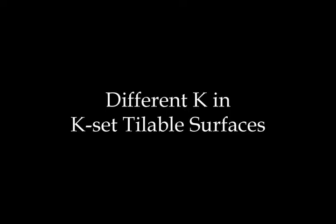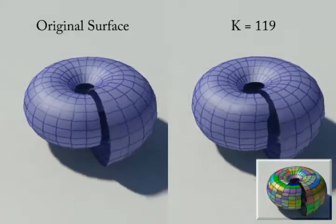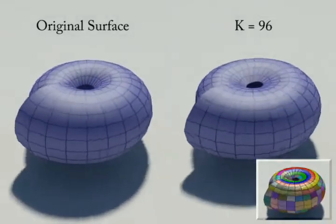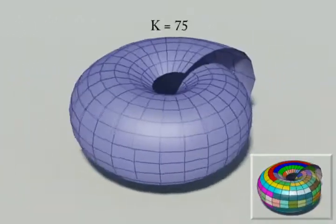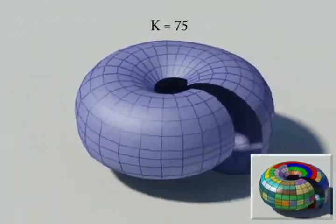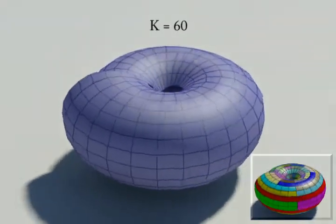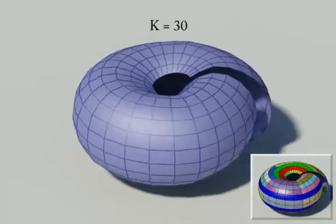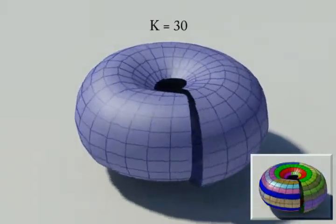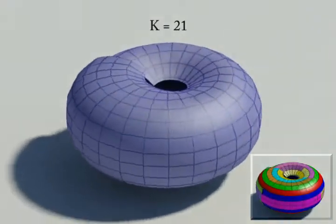Different k-set tileable surfaces. Different k in seashell: from k equals 119, to k equals 96, 75, 65, 60, 44, 30. With decreasing k, we can see that the opening of the seashell gets smaller and smaller.